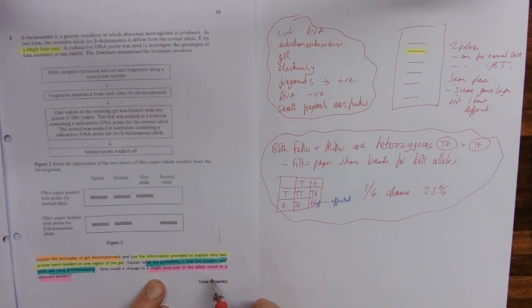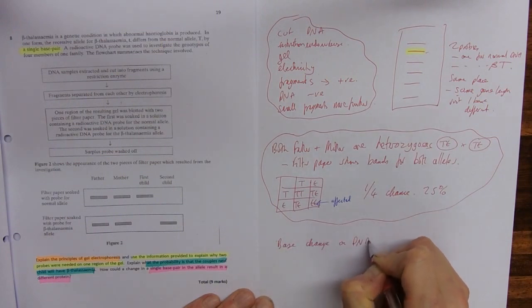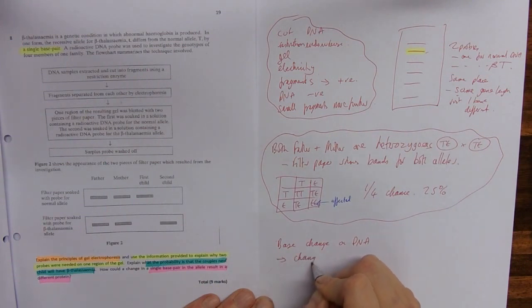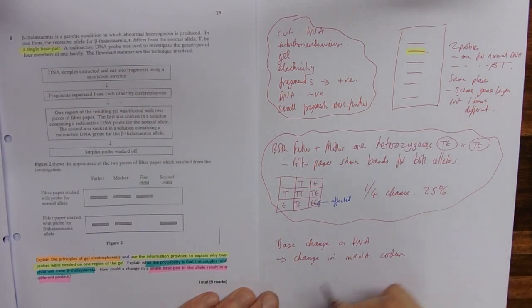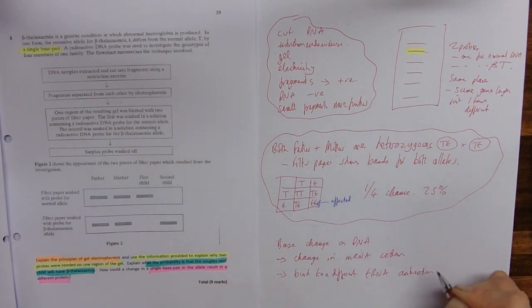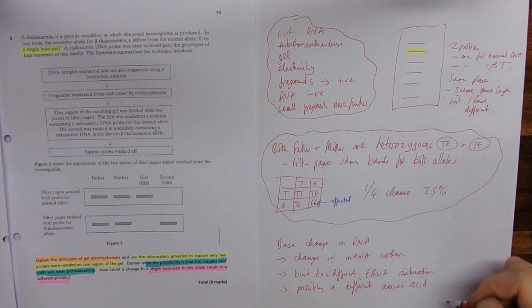How a single base pair in the allele results in different protein. Hopefully you're recognizing this sort of question. So talking about protein, we've got the base change on DNA that will lead to a change in the messenger RNA codon. And so that will bind to a different tRNA anticodon. So possibly a different amino acid is put onto our growing polypeptide chain.